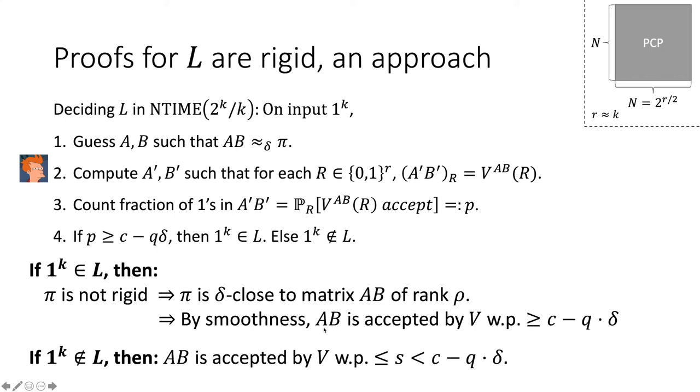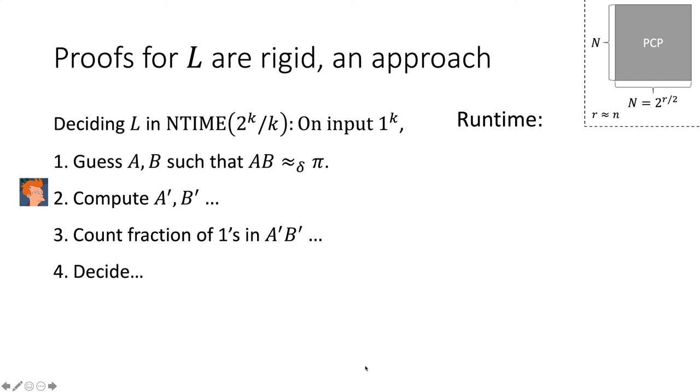This proof was not rigid, so we can approximate it with a low rank matrix. This low rank matrix is accepted with high probability by tolerance, by smoothness. And therefore, the decision procedure will say yes. If the input was not in the language, then by soundness, no matter what low rank matrix we guess, no matter what matrix we guess at all, we'll always reject with high probability. So the decision procedure will reject as well.